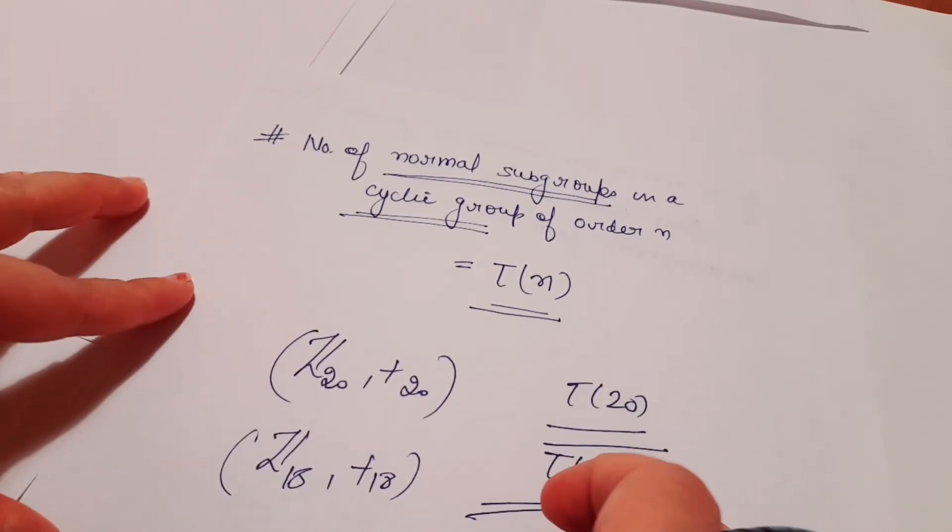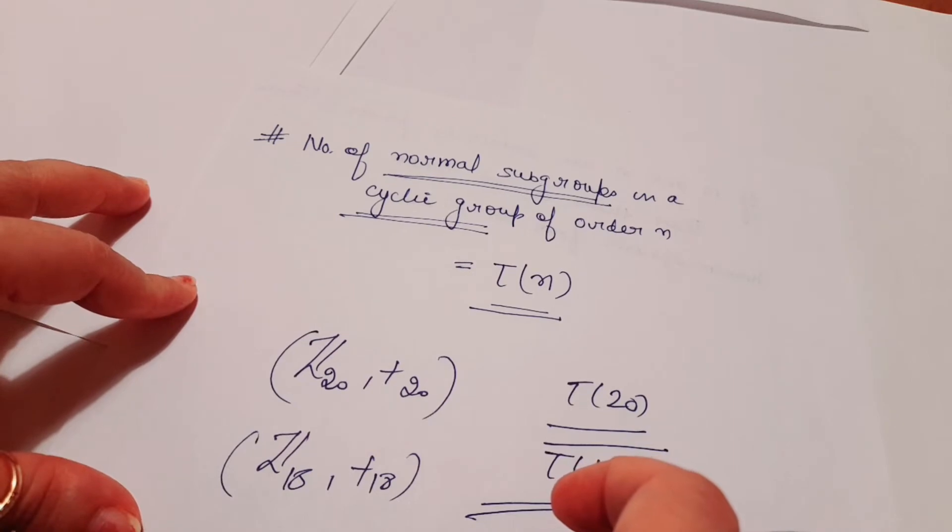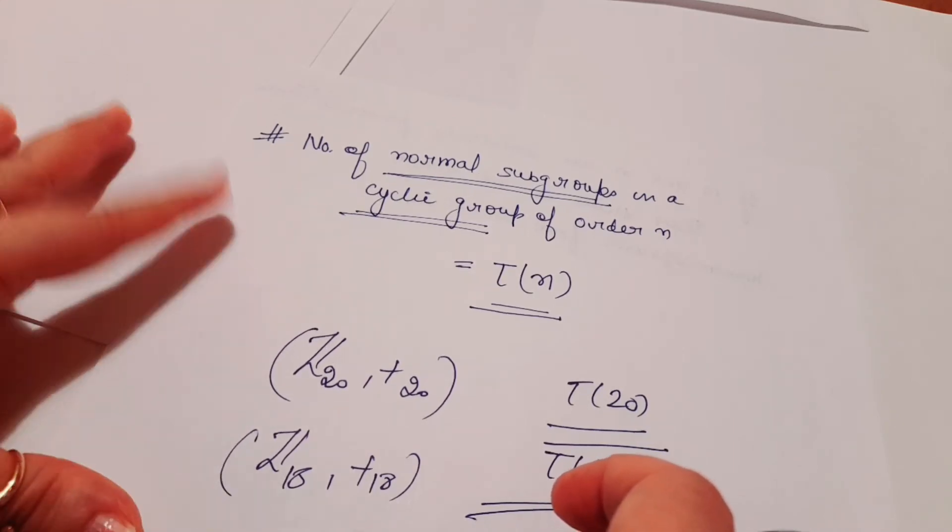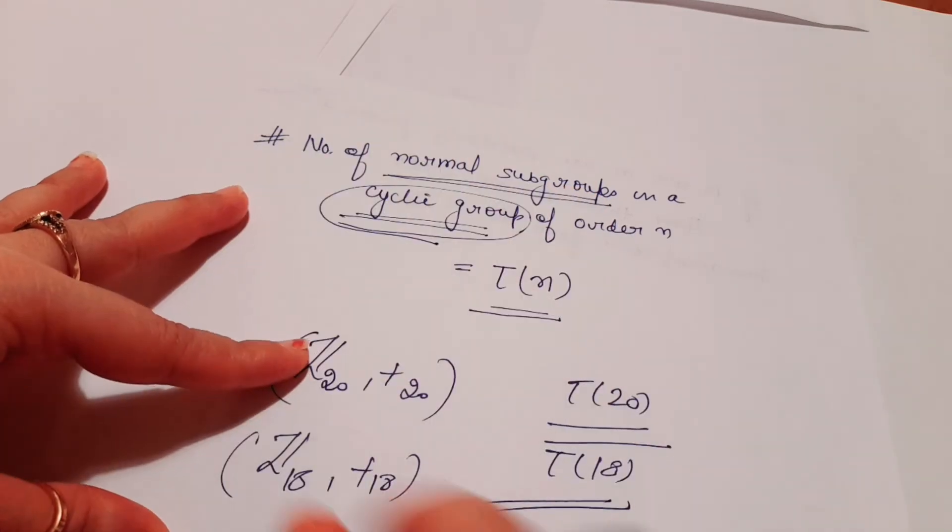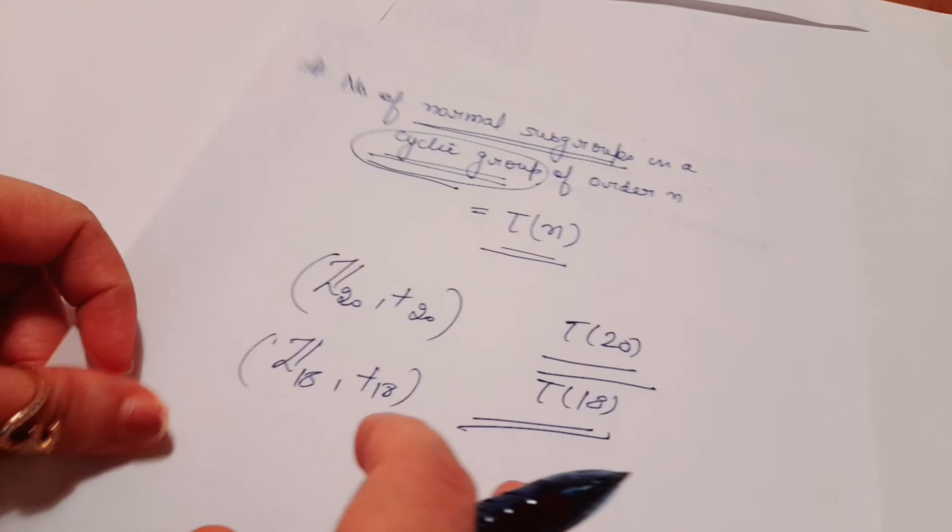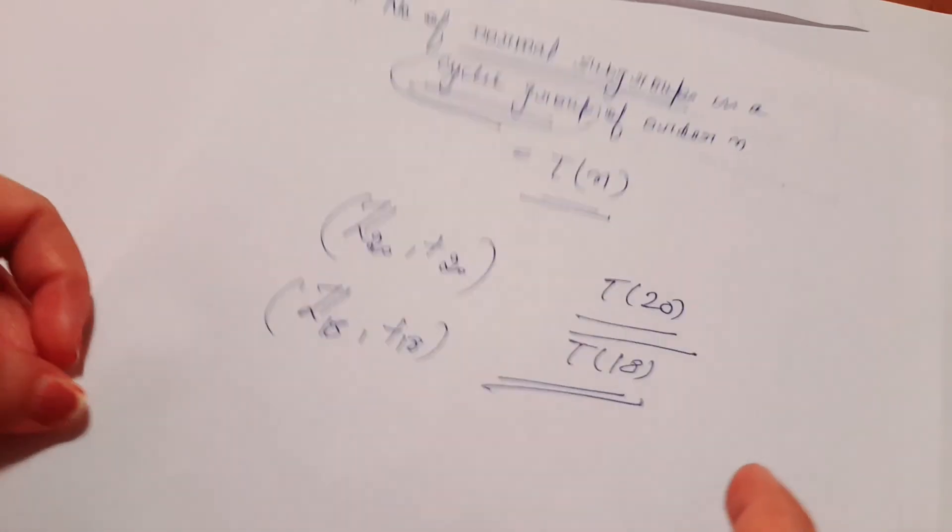These are short tricks but when you get multiple choice questions, these help a lot. You need to concentrate on cyclic groups. I have a video where I discussed short tricks on modern algebra, and there also I used these tau n and phi n functions. You can watch that video.